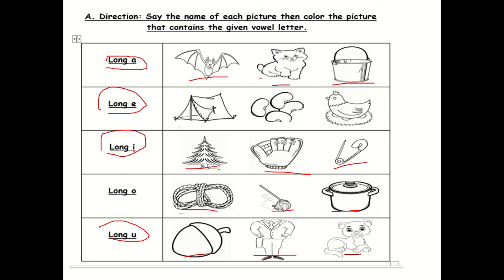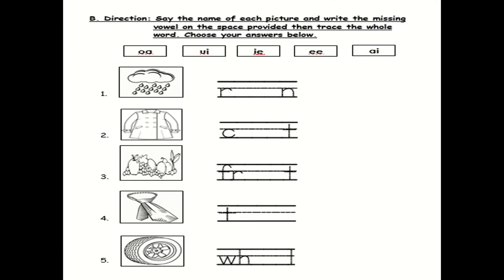Now let's go to the second part. For the second part, you have to say the name of each picture and write the missing vowel on the space provided, then trace the whole word. You may choose your answers from the boxes below. For example, number one: the first picture is 'rain'. If you notice, the word rain is not complete, so you're going to choose the missing vowel from the boxes. What do you think is the missing vowel?